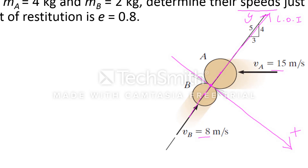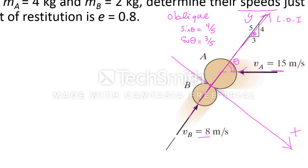Since we have the velocity of A at an angle with respect to the line of impact, this is called an oblique impact problem. This angle is theta, which is the same on both sides — also theta. Sine theta is 4/5 and cosine theta is 3/5.